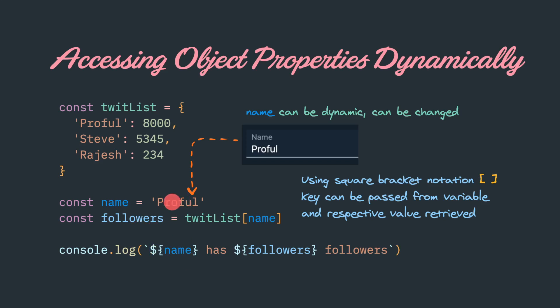If the key is not present or not available, this twitlist lookup won't lead to any error. It will just return undefined.